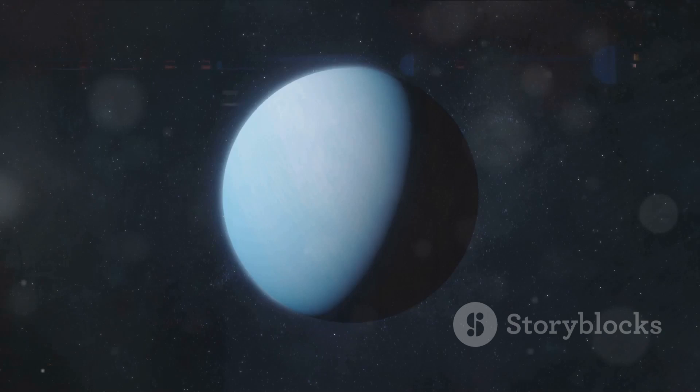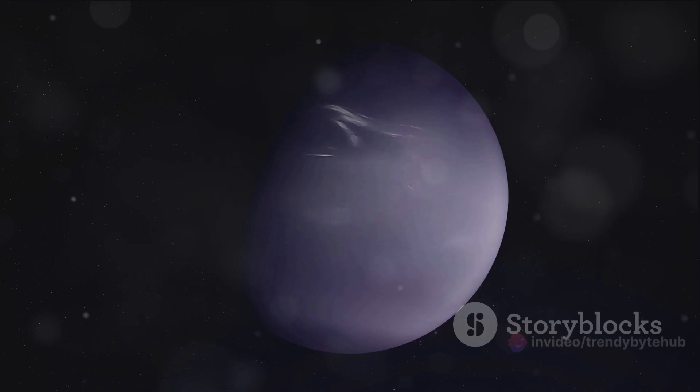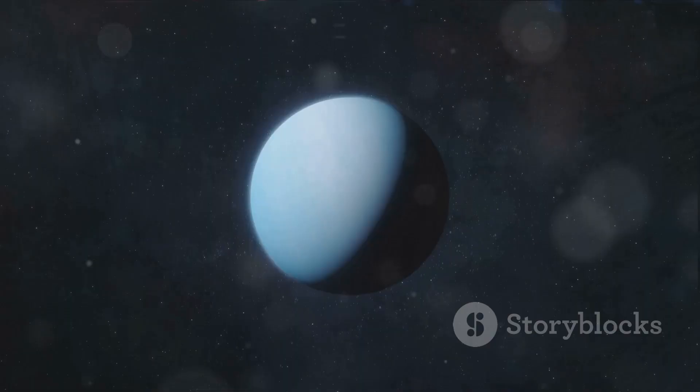But the mysteries of Neptune go beyond its mesmerizing color. Its winds are the fastest in the solar system, reaching speeds of more than 2,000 kilometers per hour. And then there's the great dark spot, a storm comparable to Jupiter's great red spot, stirring up Neptune's blue atmosphere with its tempestuous winds.